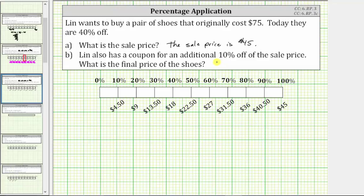If she receives 10% off of the sale price, she pays 90% of the sale price. And we can see 90% of the sale price, or 90% of $45, is $40.50. The final price is $40.50.